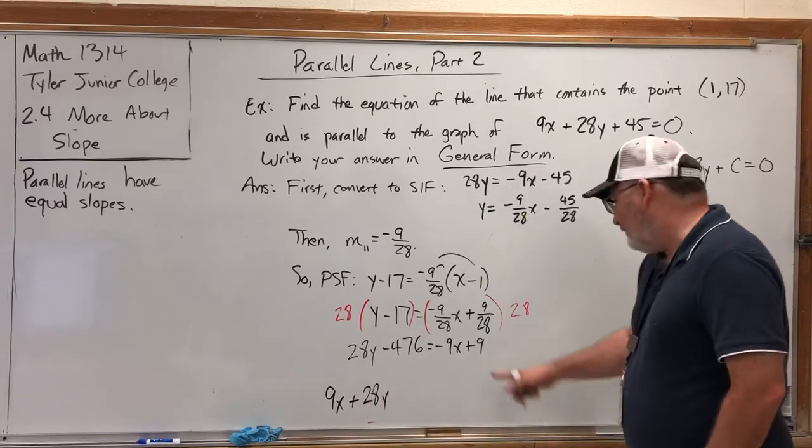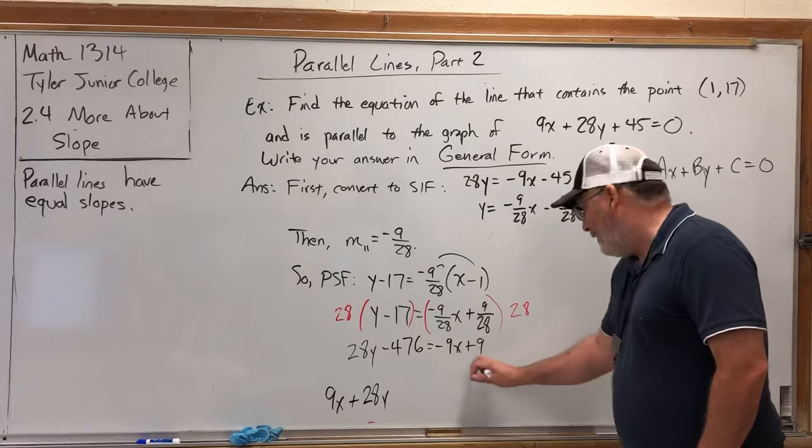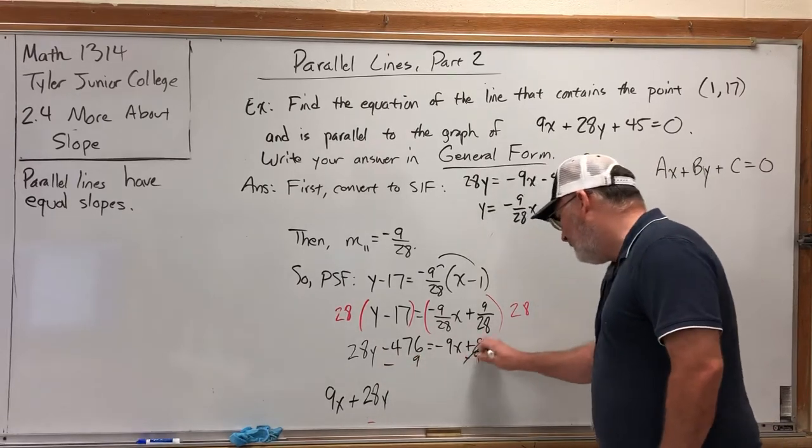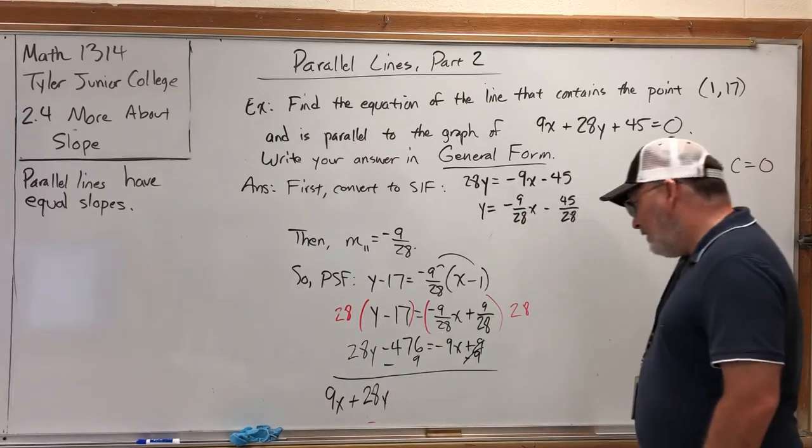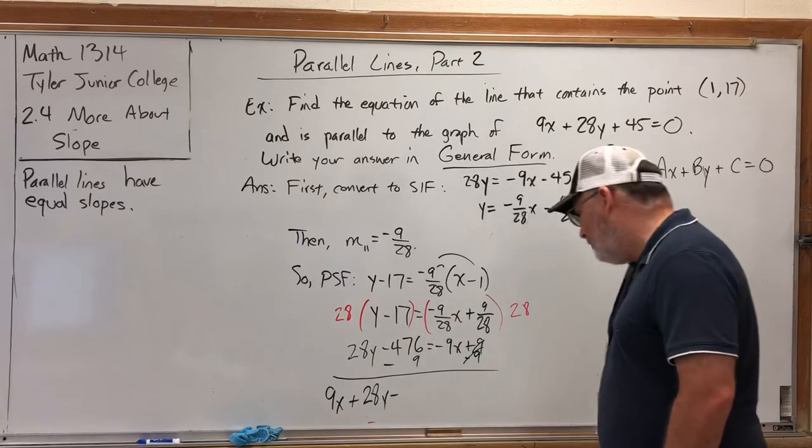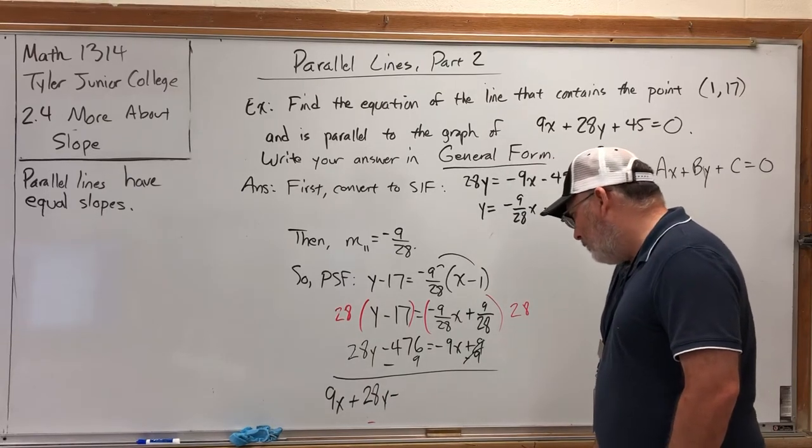And the only other thing I have to do is get rid of this 9, but since there's a like term to combine it with, I'll actually do the move of subtracting 9 from both sides. Negative 476 minus 9—when you combine two negatives, you get a bigger negative—so we get negative 485.